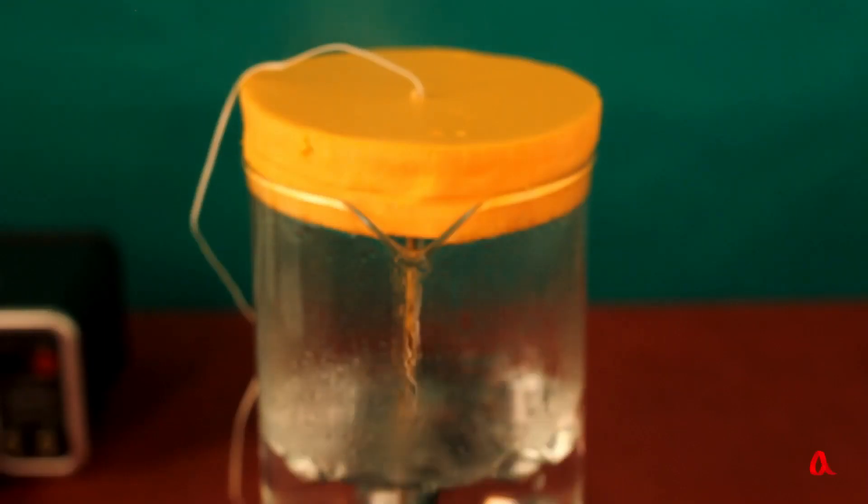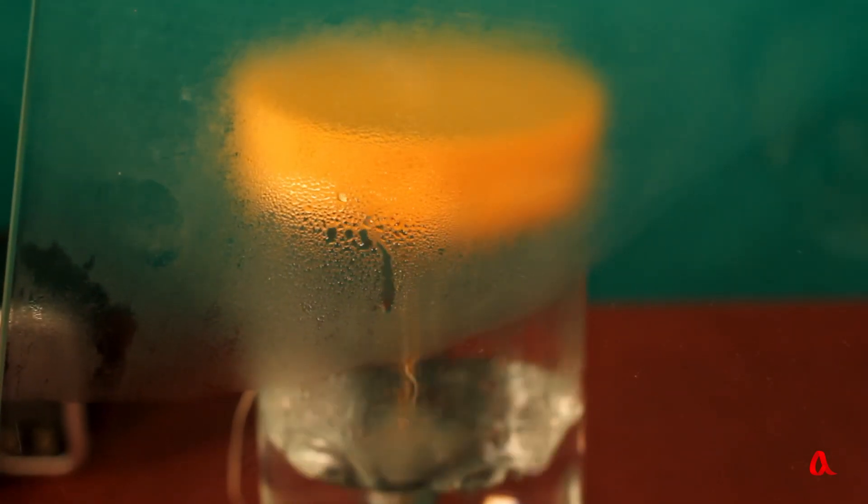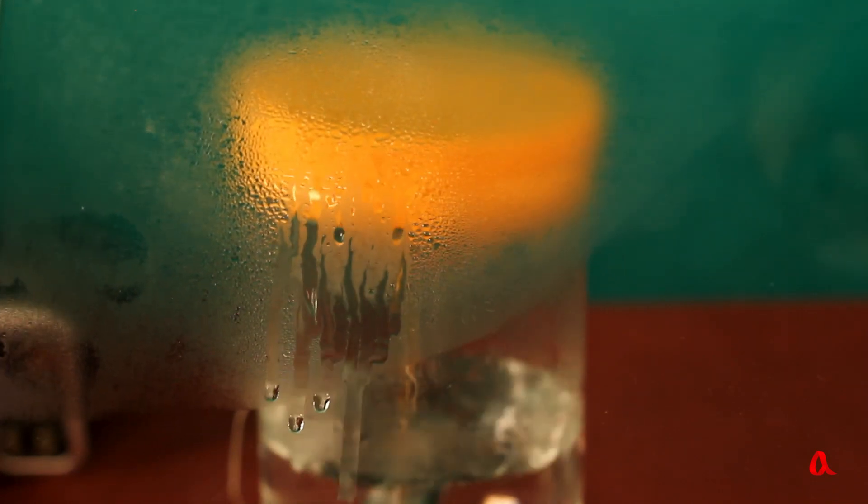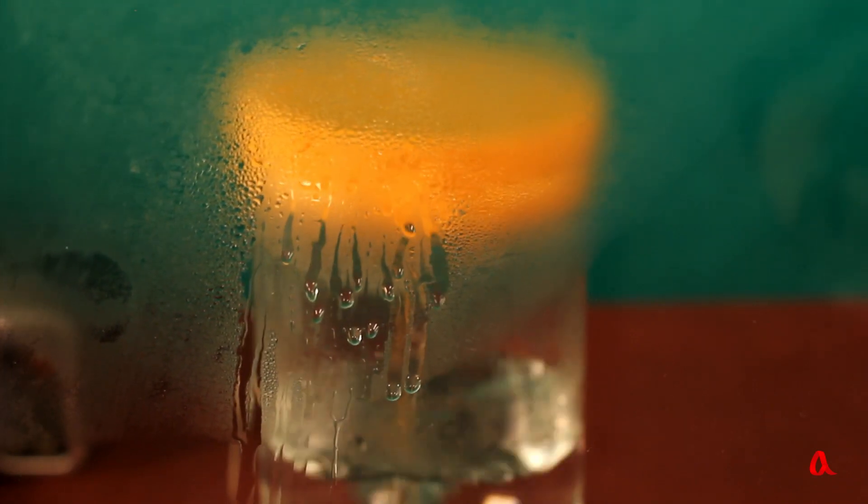We put cold glass to the spout of the beaker with boiling water. It steams up at once. Drops get bigger and bigger and the glass gets strongly heated. The heating happens very quickly, although there is little condensed water on the glass surface.